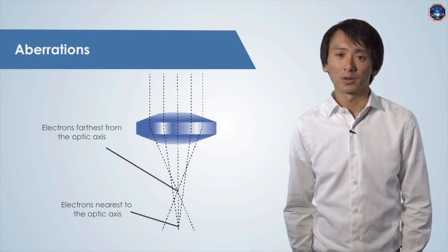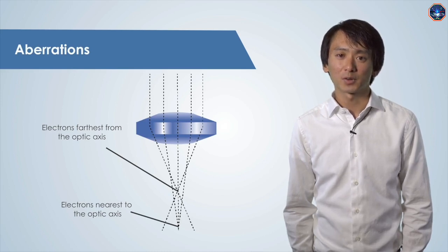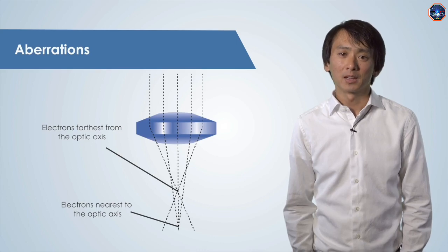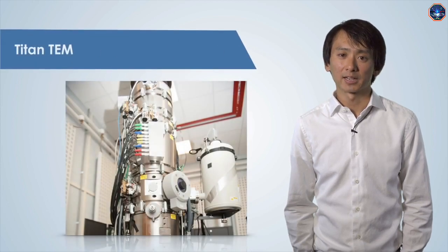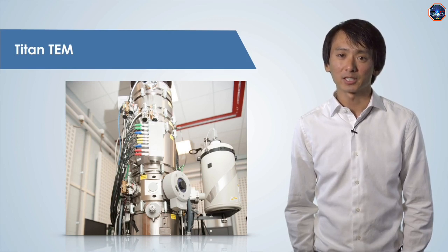In addition, aberrations or imperfections in the electromagnetic lenses lead to a distorted image. This makes it difficult to get clean, crisp images at high resolution. Luckily, many newer microscopes, such as the Analytical Instrumentation Facilities FEI Titan TEM, have an aberration corrector. This type of advance in instrumentation makes collecting very high-resolution images possible.